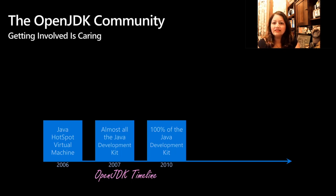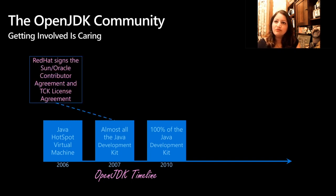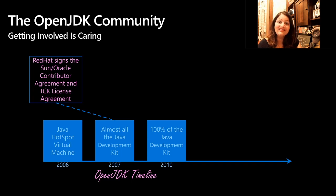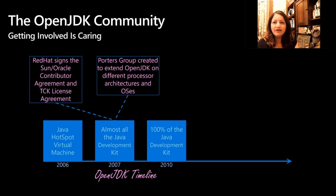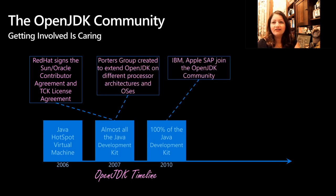Let's look at the same timeline but with respect to community involvement. By 2007, we saw Red Hat signing what is now known as the OCA — the Oracle Contributors Agreement, which back then was called the Sun Contributors Agreement. Red Hat also signed the TCK. Next came the Porter's Group, which is very important because it helps with bringing OpenJDK to newer architectures and operating systems. That group was formed in 2007, and by 2010 we had IBM, SAP, Apple, and everybody being involved from the OpenJDK community.